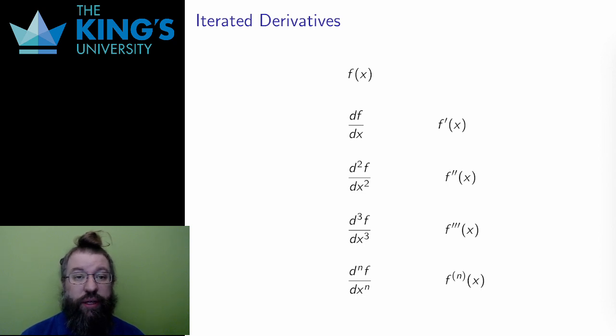First, I want to talk about iterated derivatives. The derivative of a function produces another function, one which measures the rate of change of the first function.